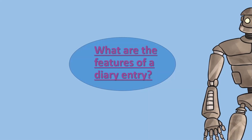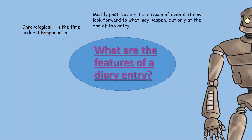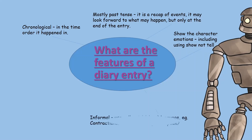So let's go through and see what the features are. We have chronological order, where you put the events in order of time of what had happened during the day. You would use past tense — remember, you're recounting and retelling an event that has already happened. You would show the character's emotions using show not tell: discuss how the character was feeling, or show actions towards how they are feeling. You would speak in an informal tone using colloquial language.